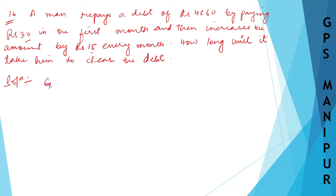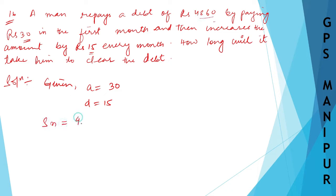So what is given here: rupees 30 in the first month, that is A is equal to 30. The amount increases by 15, so D is equal to 15. And the total debt, that is S_N, is equal to 4860.